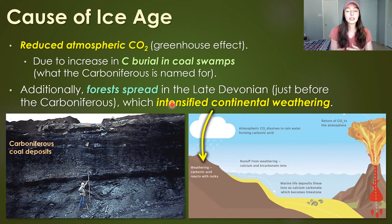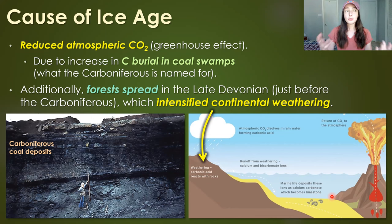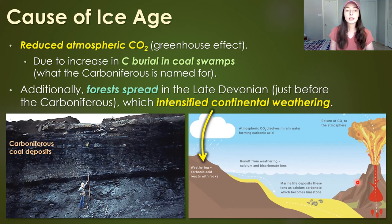In addition to a reduced greenhouse effect, forests spread in the late Devonian, just before the Carboniferous, which intensified continental weathering. The weathering of continental rocks leads to the eventual deposition of carbonate rocks containing carbon, representing a long-term carbon sink in which carbon is buried for millions of years until volcanism or some other process releases it back to the atmosphere. Over geologic timescales this also reduces atmospheric CO₂.